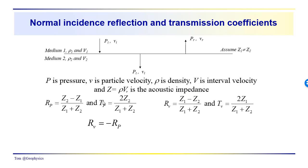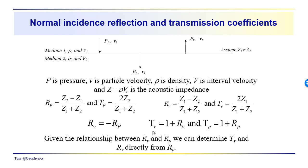We can see that R_p and R_v are related: if we multiply R_v by −1 we get Z2 − Z1, so R_p = −R_v, or equivalently R_v = −R_p. We also showed through a bit of algebra that the transmission coefficients satisfy T_v = 1 + R_v and T_p = 1 + R_p. So given those relationships, all we need to know is R_p — from it we can determine R_v, T_v, and T_p directly.